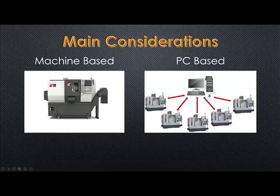Also, control-based conversational is tailored for the specific machine on which it is installed — one control equals programming for one machine. PC-based KIPWARE can be used to program multiple machines. Any FANUC or FANUC-compatible control machine, including Haas, can be programmed using a single computer running KIPWARE. This feature can save a shop thousands by allowing for the purchase of a basic CNC machine, saving on the conversational option.